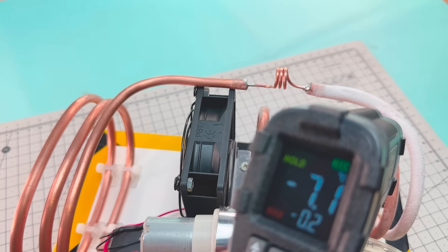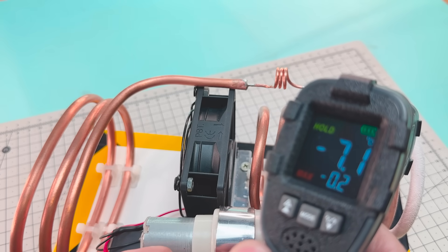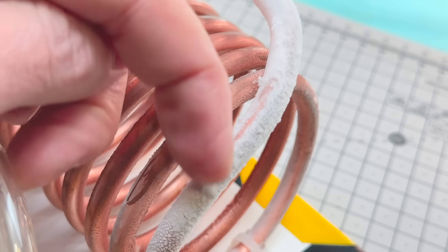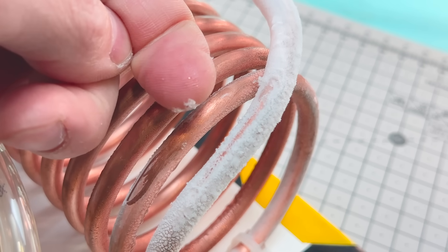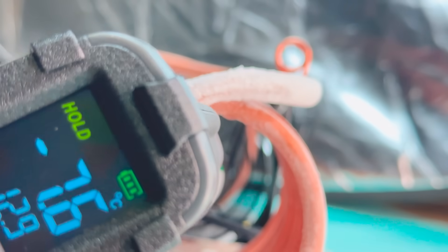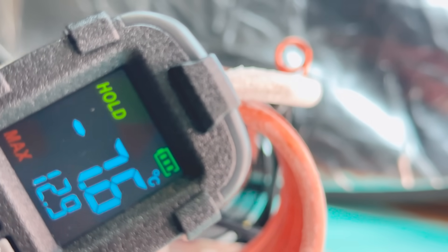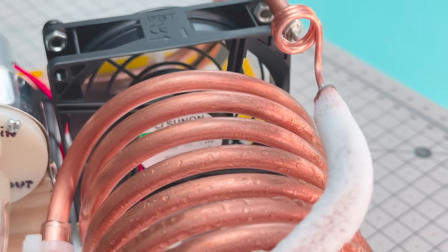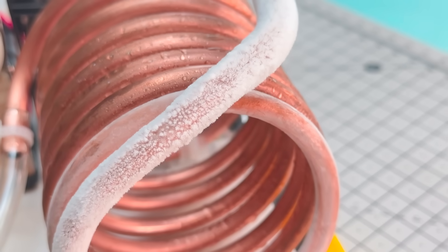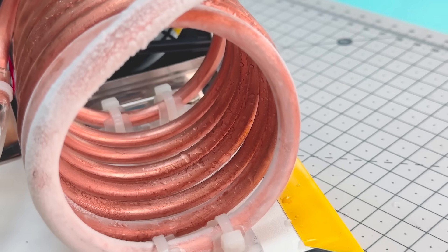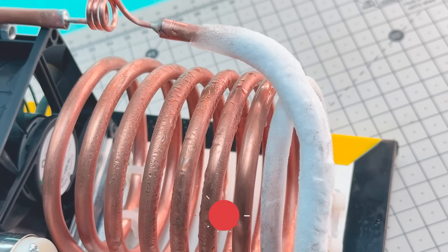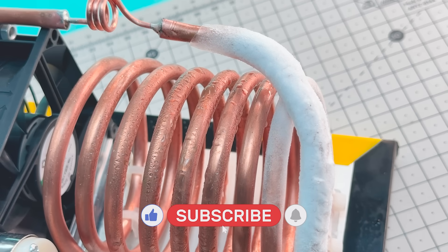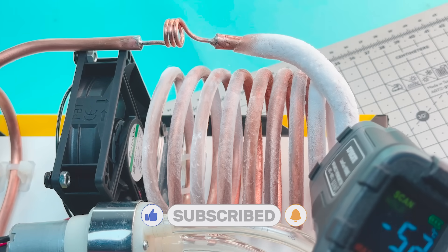In the first measurements, we get temperatures of minus 7 degrees Celsius. But if we give it some time, we'll see the tubing get colder and colder. Until finally there it is, minus 10.